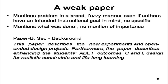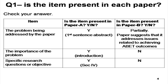On the other hand, a weak paper might have a problem mentioned but not as concretely, precisely, and in as much detail as we saw in the strong paper. A weak paper might mention a problem in a broad and fuzzy manner even if the authors have an intended goal in mind. In paper B's background section, there is a sentence describing new experiments and open-ended design projects and trying to make a connection to the ABET criteria, but it is not clear why this problem is important or what exactly the research objective of the paper is.